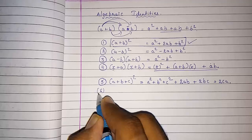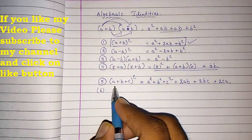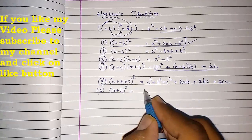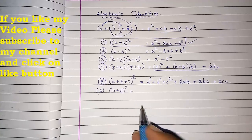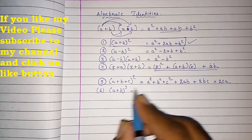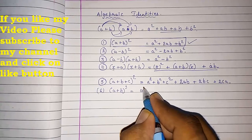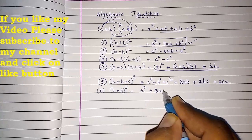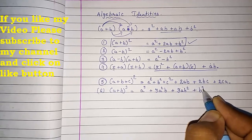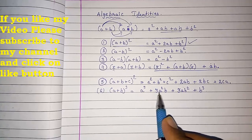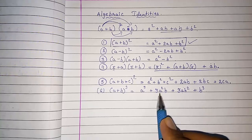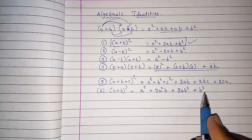Now identity number six. Now here we were doing squares, but now we have to do the cube. A plus B whole cube — that means A plus B into A plus B into A plus B, three times we have to multiply, which is very difficult. So directly they had given us a shortcut: A cube plus 3A square B plus 3AB square plus B cube. First the cube of the first term, then 3 times the square of the first term into the second term, then 3 times the first term into the square of the second term, and then the cube of the last term.